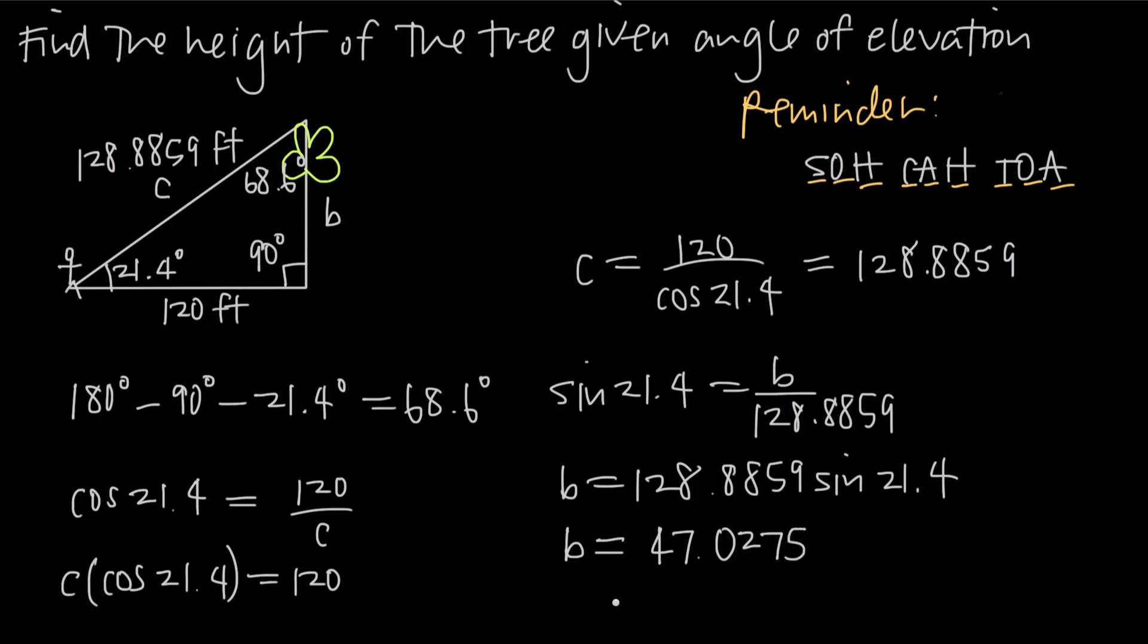If we round that to the nearest foot, we get 47 feet. So the height of the tree is approximately 47 feet. And that's how you use the angle of elevation to find the length of the side of a triangle.